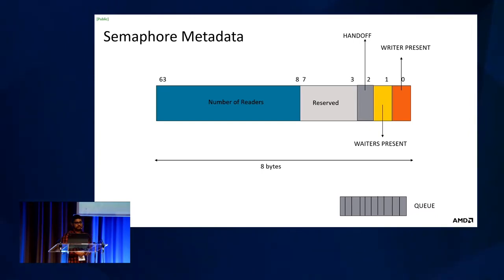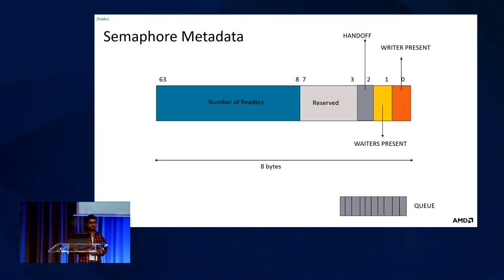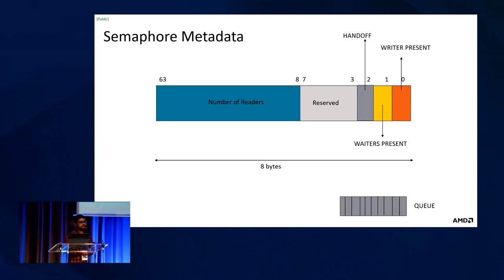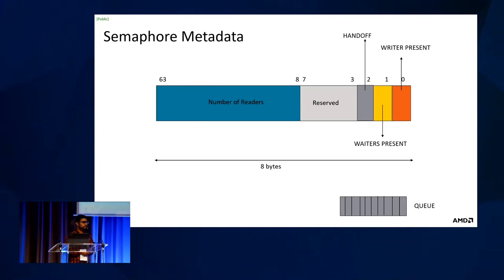This is the basic semaphore metadata for a 64-bit machine. The semaphore is a 64-bit value divided into multiple subfields: bit 0 captures whether a writer is within the critical section, bit 1 captures if there are any waiters in the queue, a handoff bit captures whether we want to avoid optimizations that can violate FIFO order — this can happen with optimistic lock stealing when a reader takes the optimistic spin path. Bits 8 to 63 capture the number of readers, and there is a wait queue maintaining all contending waiters.